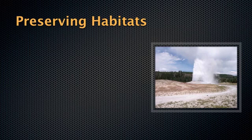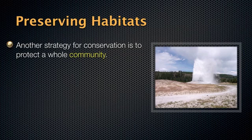Let's talk about some of the things we do to protect biodiversity. The first is preserving habitats. A habitat is a place where an organism lives out its life. One strategy for conservation is to protect an entire community. We do this by setting up nature preserves. The first national park was in 1872 in America — that is Yellowstone National Park.